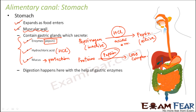Digestion of carbohydrates takes place in the mouth with salivary amylase, and digestion of proteins takes place in the stomach with pepsin and hydrochloric acid. Acidity occurs when the amount of hydrochloric acid in the stomach increases too much. To solve this, people take antacid tablets, which act opposite to acid and reduce the acidic environment of the stomach. All enzymes released from gastric glands in the stomach are called gastric enzymes.